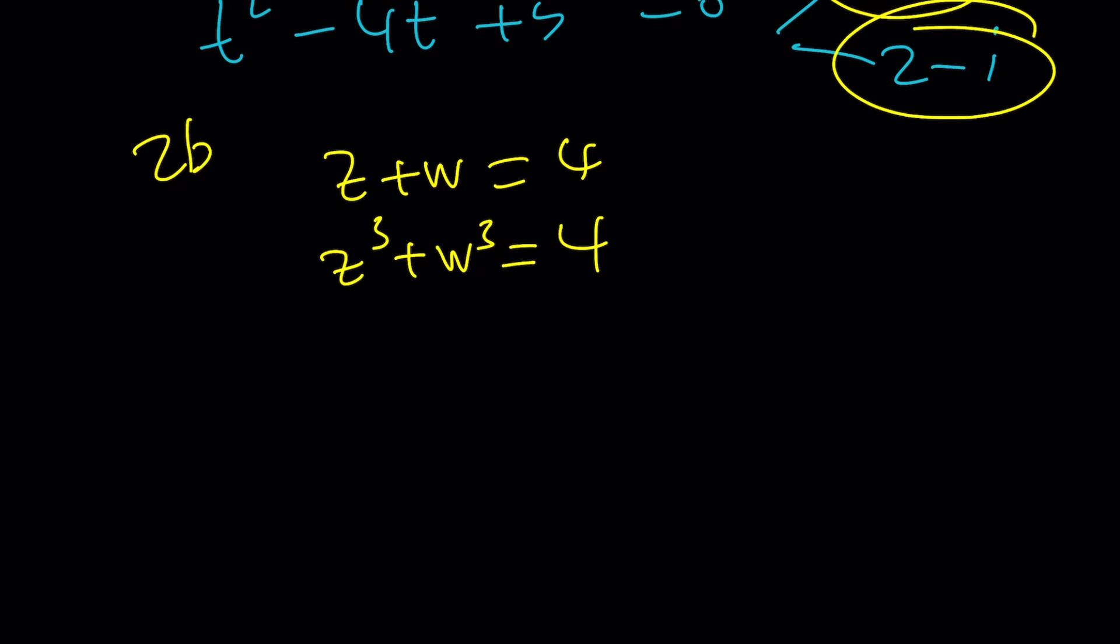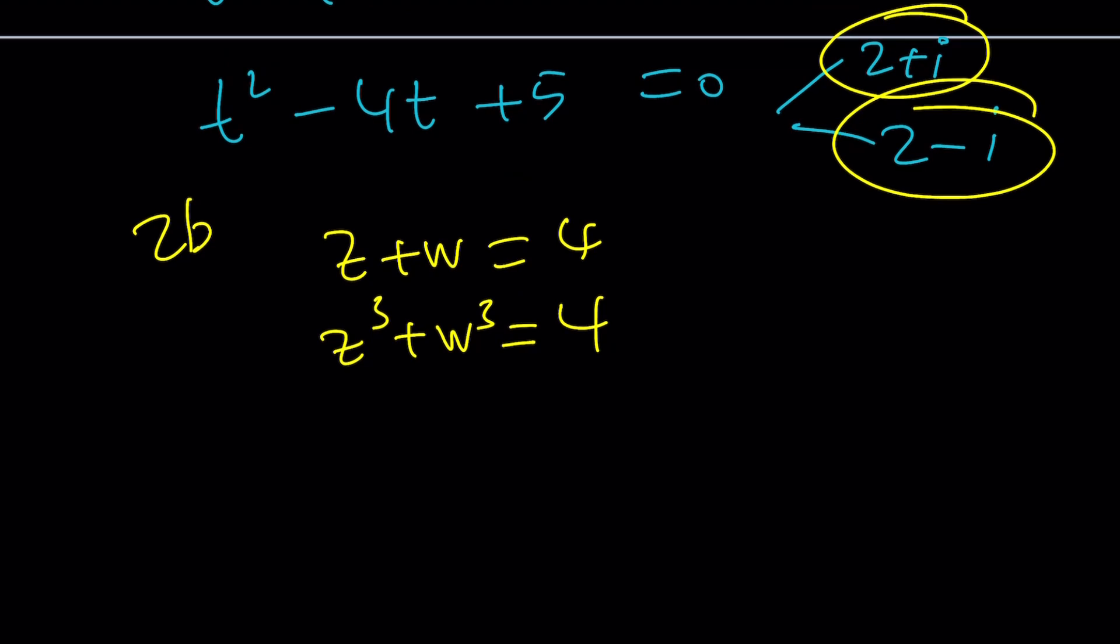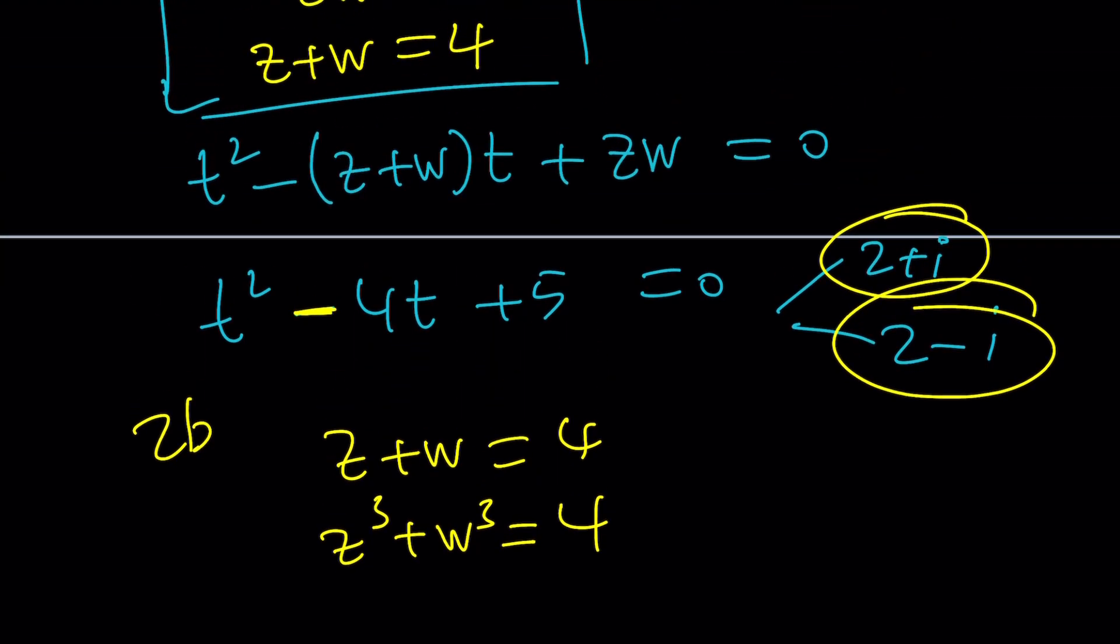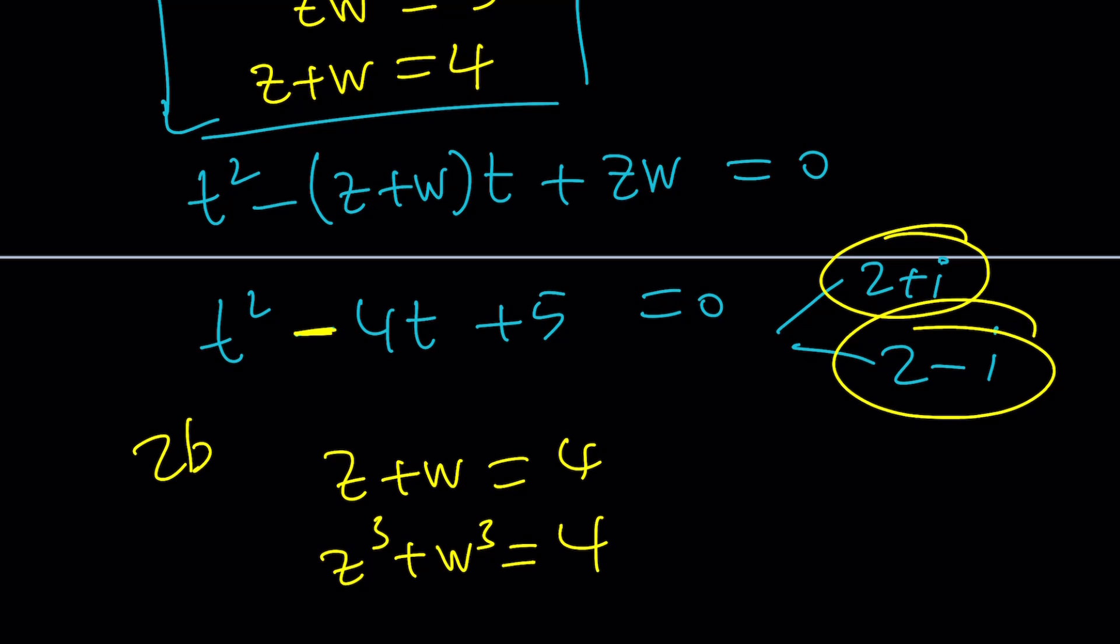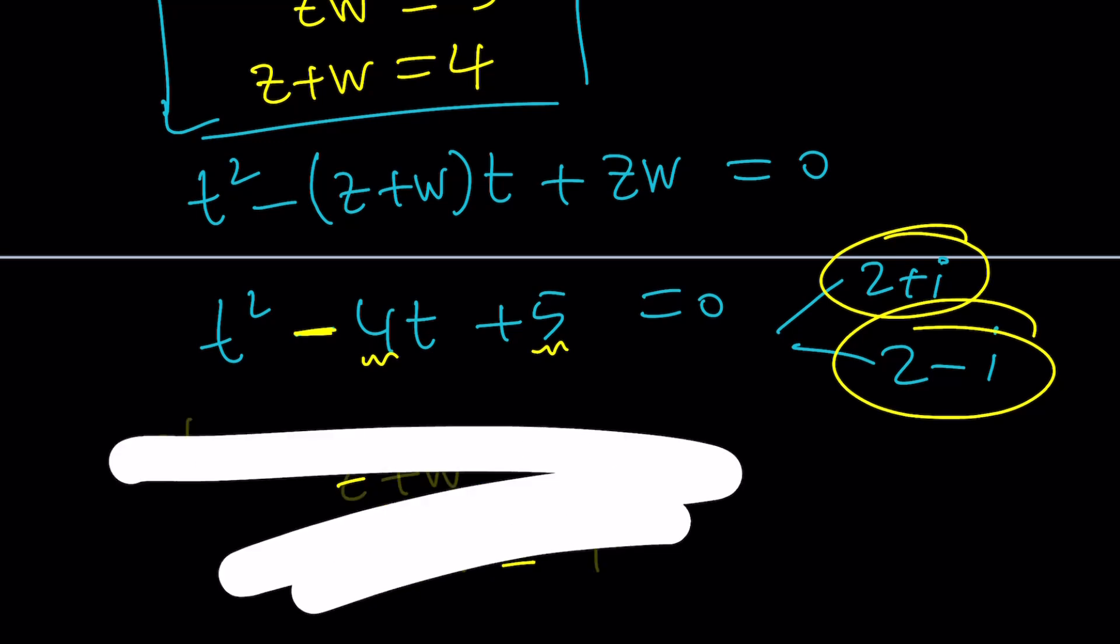And the way they work is actually as follows. I do know that the sum of these two is 4 and the product is 5. This is the sum, remember? And this is the product. So I can basically do the following with the 2B method.